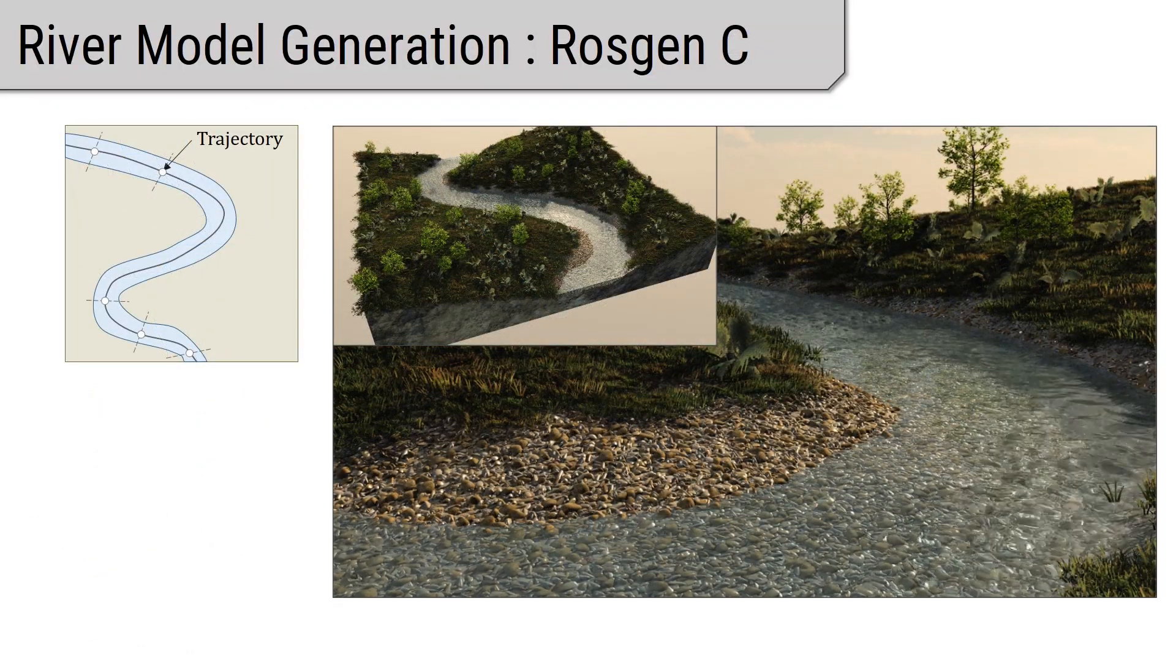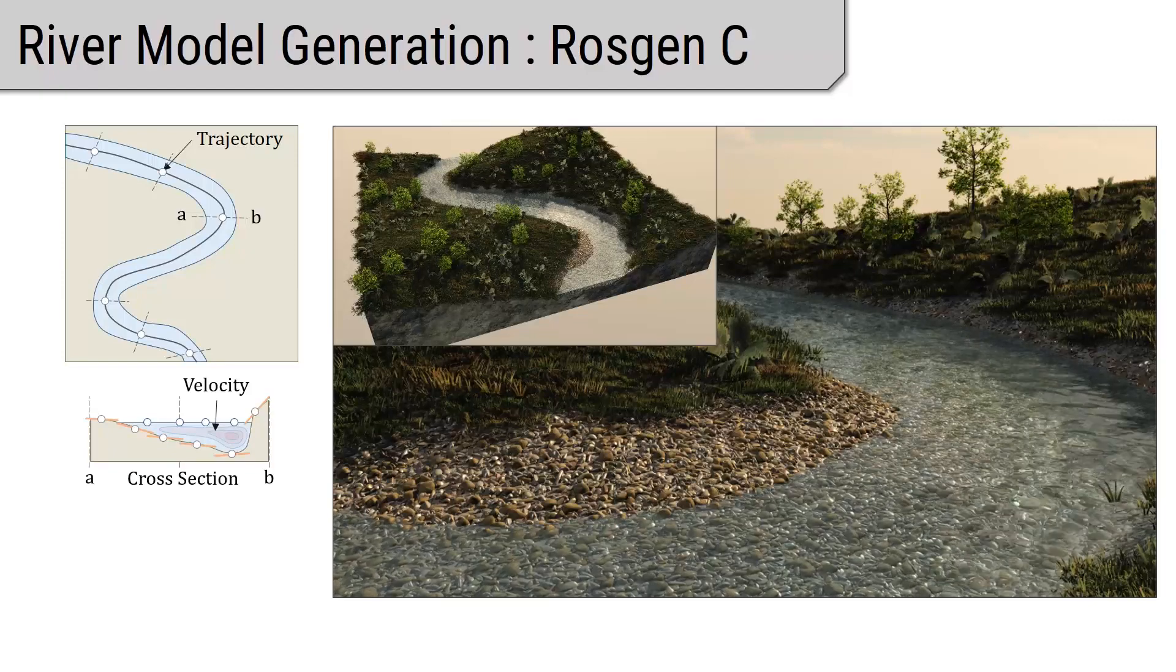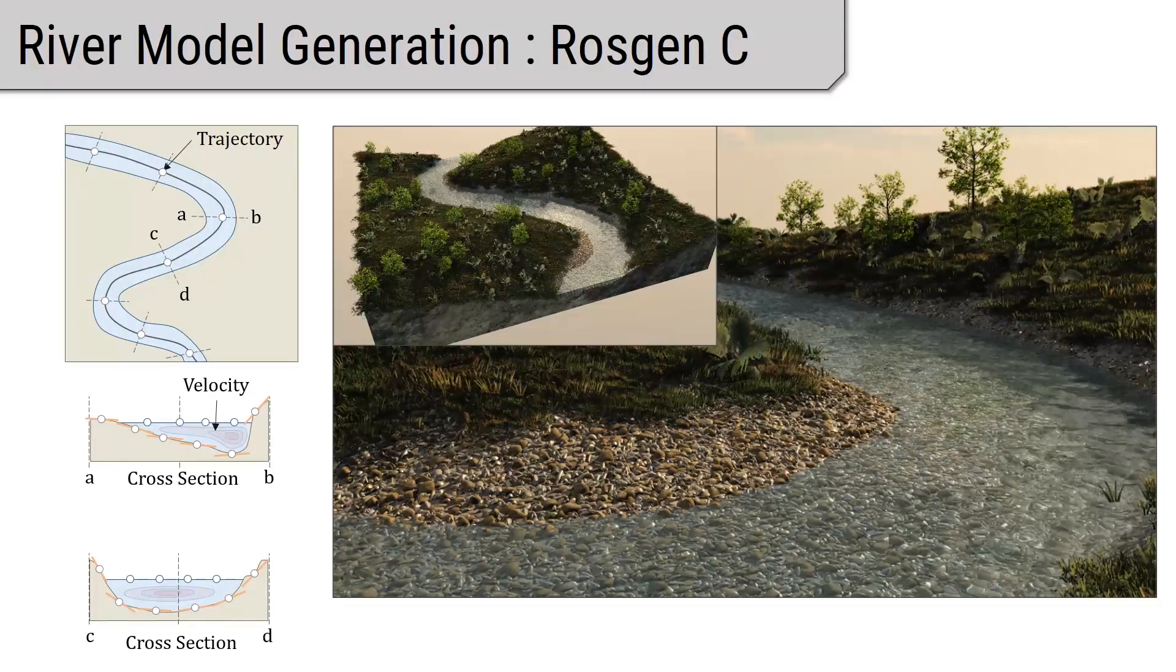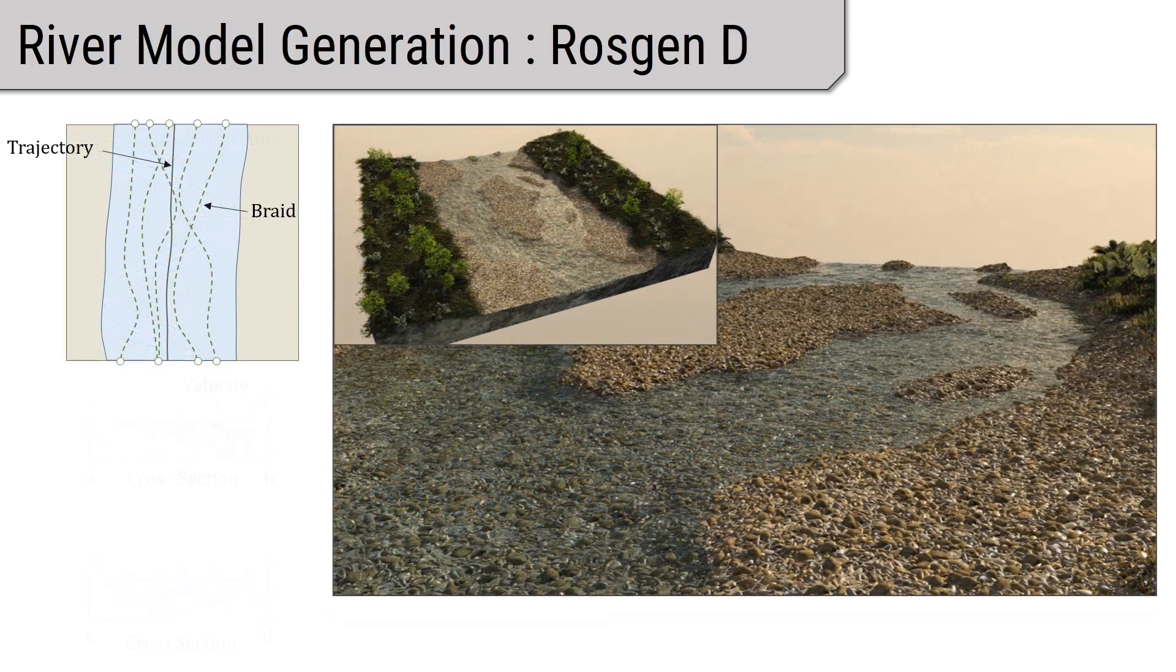Rosjan type C has strong curvature in its trajectory with a low overall slope. It is characterized by an asymmetric cross-sectional profile in sections of high curvature.